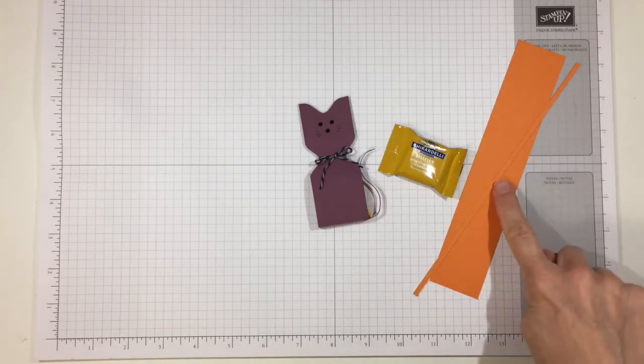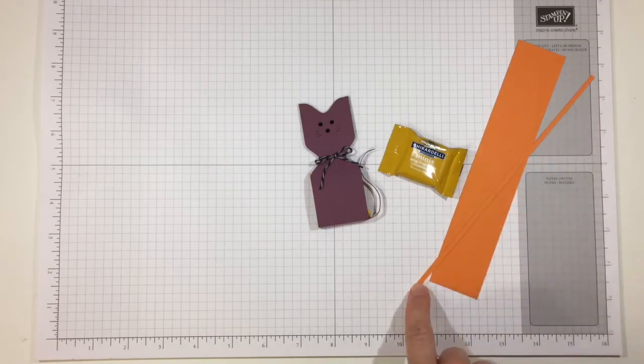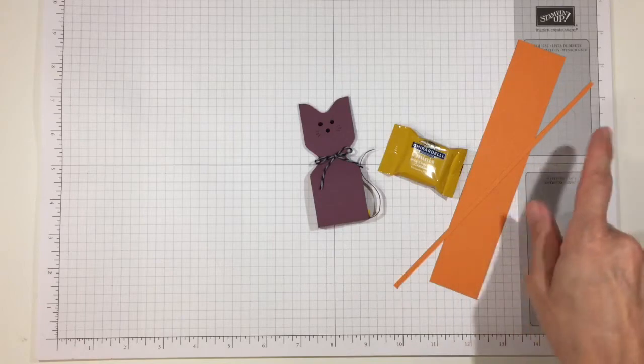What I did is I went ahead and before I cut my piece off the cardstock, I just shaved off a one eighth inch piece and I'll just cut it down for the different cat tails.